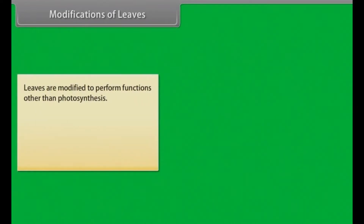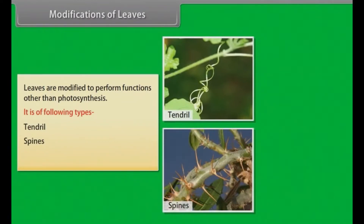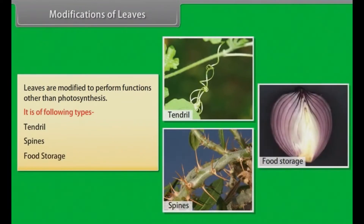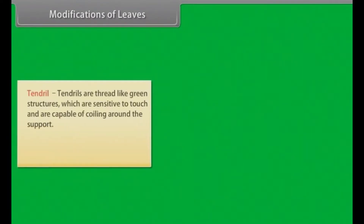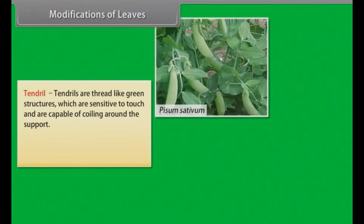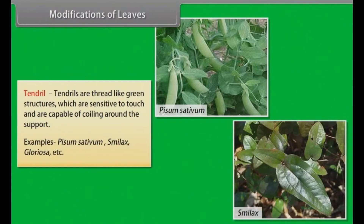Modifications of leaves. Leaves are modified to perform functions other than photosynthesis. These modifications are of the following types: tendrils, spines, and food storage. Tendrils are thread-like green structures which are sensitive to touch and are capable of coiling around a support. Examples: Pisum sativum, Smilax, Gloriosa, etc.